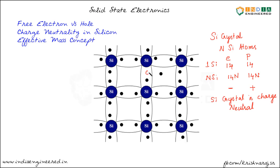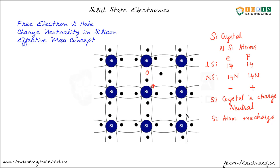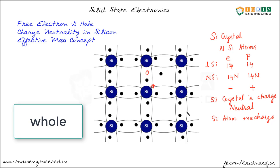Let's say a bond breaks and an electron comes out of the bond — a hole is created. We have a hole here and a free electron within the crystal but outside the bond. The silicon atom here has gained positive charge. However, the silicon crystal is still charge neutral. It is true that this silicon atom has a positive charge, but at the same time there is an electron within the same crystal with equal and opposite charge. So the silicon crystal is still charge neutral — it does not have a net positive or negative charge.